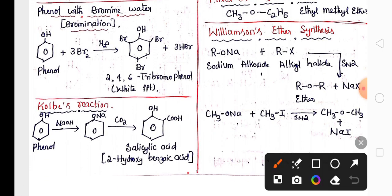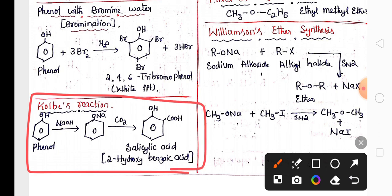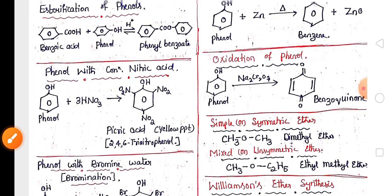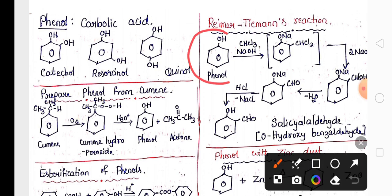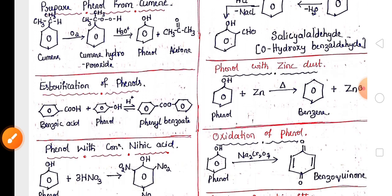Then Kolbe's reaction is very very important for two marks where phenol converts to salicylic acid. One more reaction of phenol is Reimer-Tiemann reaction where phenol on reaction with chloroform and NaOH gives salicylaldehyde. It is also very important.